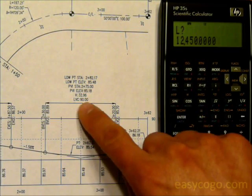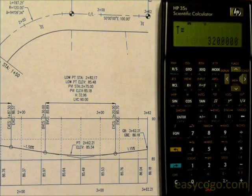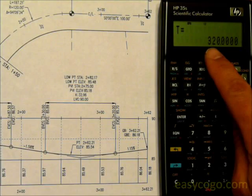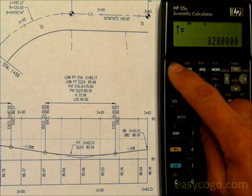Length of the vertical curve - our sample is 90 feet, press RS. The PVT station, and notice it has an equal, so that's the result. It's telling us it's 3 plus 20, which is what our sample shows.